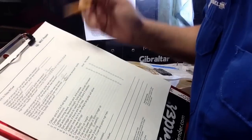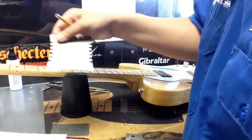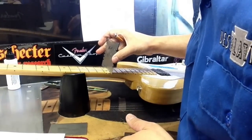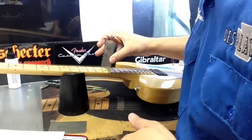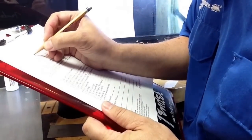The next thing we're going to do on the guitar is determine what kind of radius the fretboard is. We're going to use a radius gauge, and I already think it's a 9.5. It is exactly 9.5, so we'll mark down that the fretboard is 9.5.